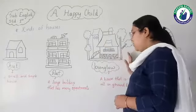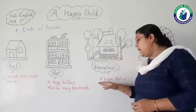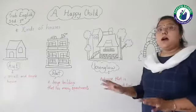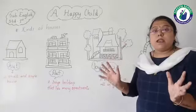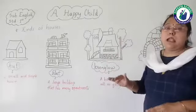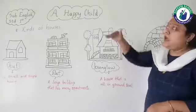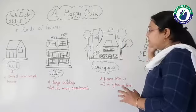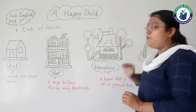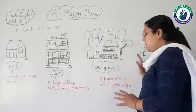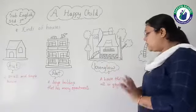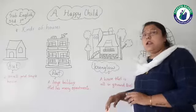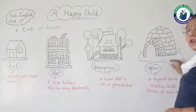Third: bungalow. A bungalow is a house that is all on ground level. A bungalow covers a very big area, but it is only on the ground level — not having any apartments or floors. Number four is igloo.